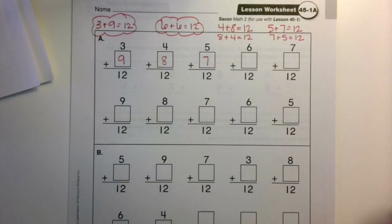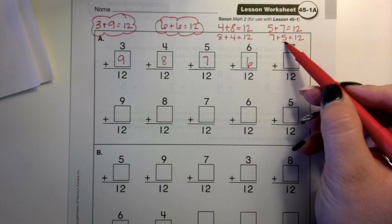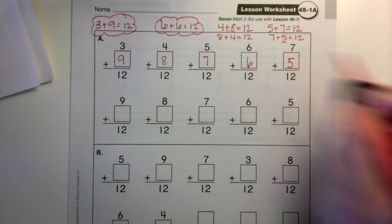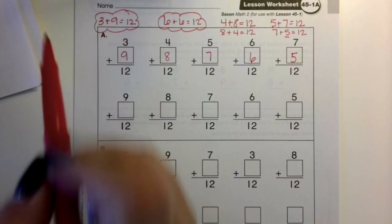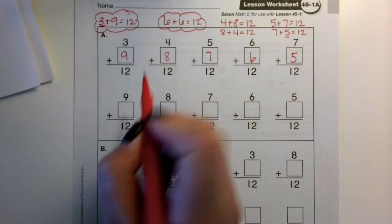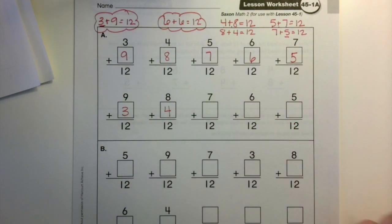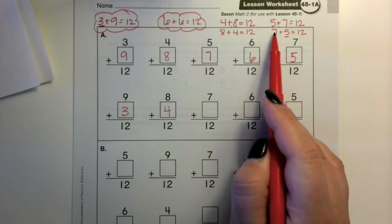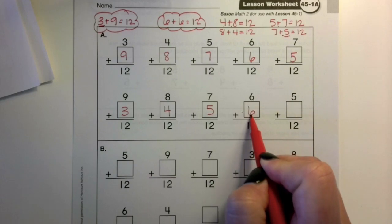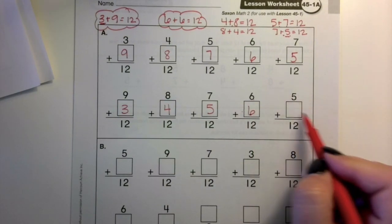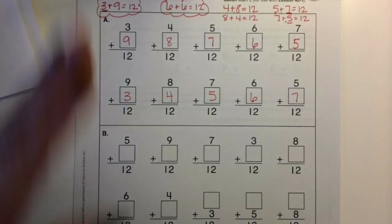4 plus 8 is 12. 5 plus what is 12? 7. 6 plus 6 is 12, right? 7 plus 5 is 12. 9 plus what is 12? 3. 8 plus 4 is 12. 7 plus 5. 6 plus 6 is 12. And 5 plus what is 12? 5 plus 7 is 12. Okay?